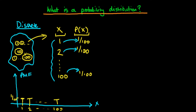This graphical way of illustrating a probability associated with each discrete value is the probability distribution for a discrete random variable, and in that particular case we call it a probability mass function.